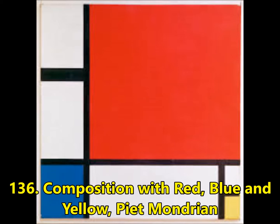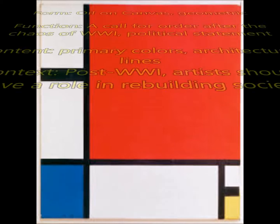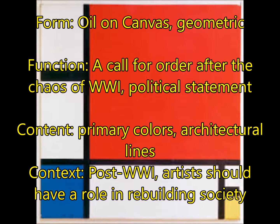Here we have Composition with Red, Yellow, and Blue by Piet Mondrian. This is an oil-on-canvas painting with very geometric forms. For function, it doesn't look like it, but it's actually a call for order after the chaos of World War I — this is a political statement with a much deeper meaning than the form initially suggests.